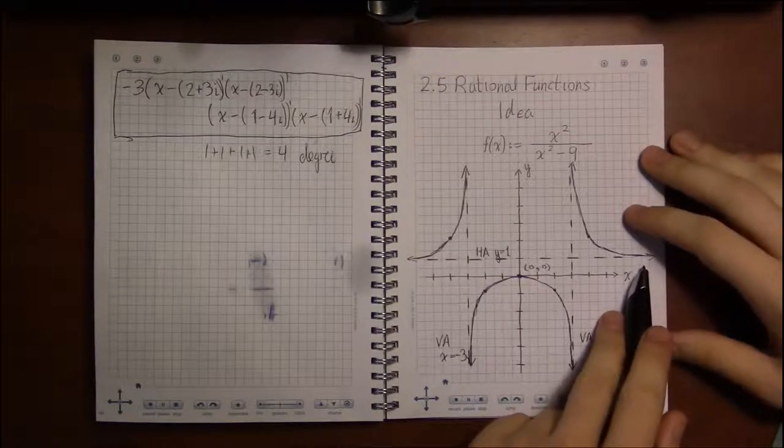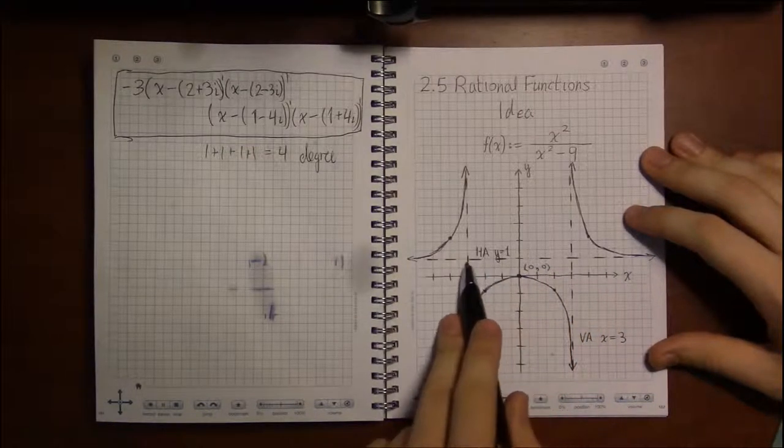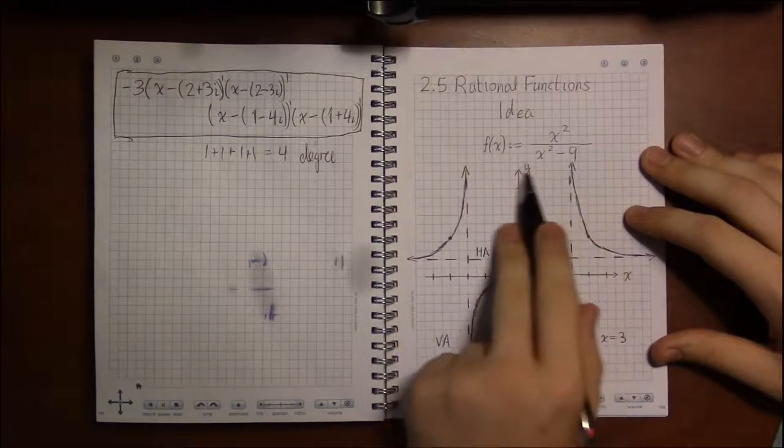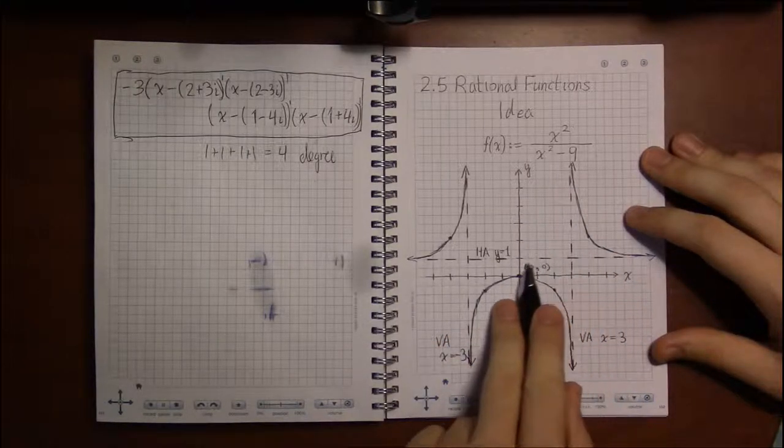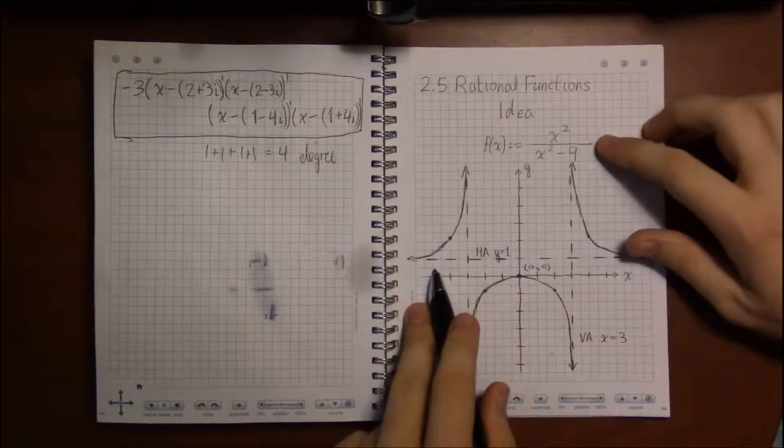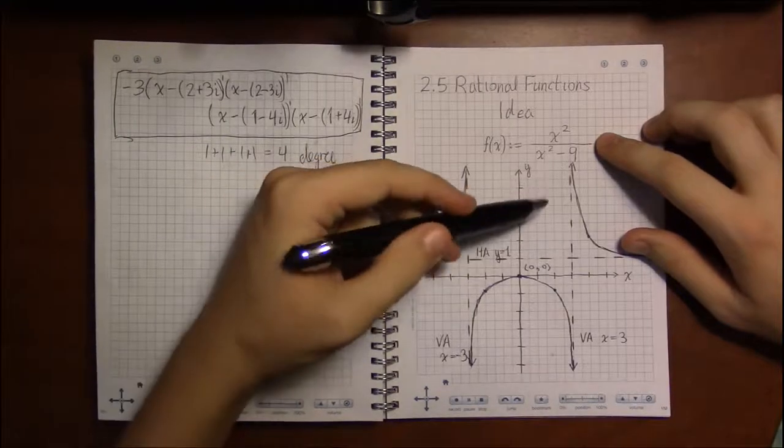We've got a couple of interesting features—these dashed lines. They aren't really part of this function in a sense; they're just there to help draw and illustrate some of the properties of the functions. These are called asymptotes.